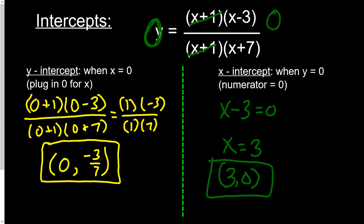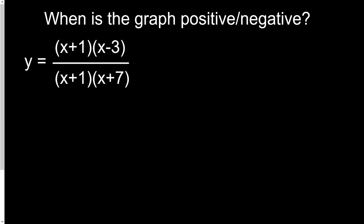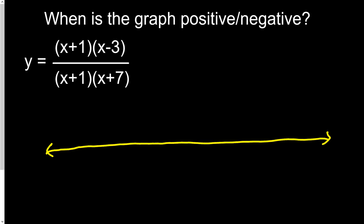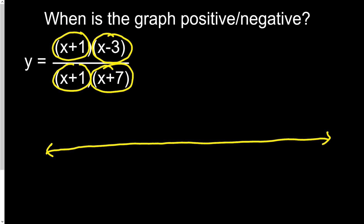The last thing before graphing is to determine when the graph is positive and negative. We set up a number line using the zeros of all the factors in the numerator and denominator. Negative 7 makes the bottom 0, negative 1 makes both top and bottom 0 (that's the hole), and positive 3 makes the top 0. We place these on the number line and test values in each region.